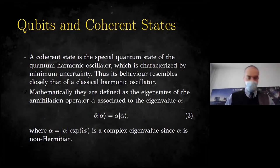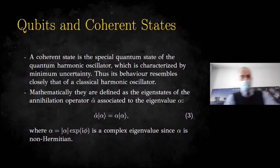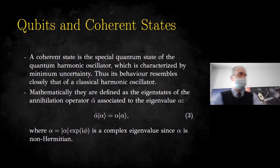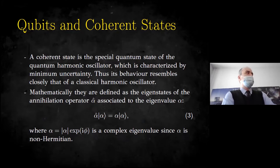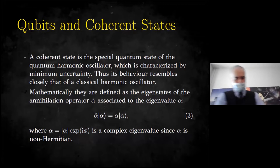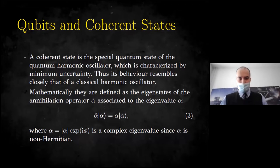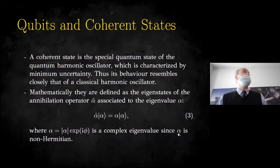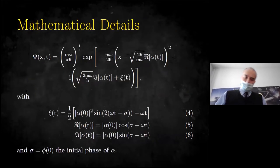How do we construct our qubits? We construct them through coherent states. Coherent states are the special states of the quantum harmonic oscillator characterized by minimum uncertainty, so the product Δx·Δp becomes minimum. Thus, their behavior resembles closely that of a classical harmonic oscillator. The coherent states won the Nobel Prize for Roger Glauber, because under some conditions they can describe the physics of lasers. Mathematically, they are defined as the eigenstates of the annihilation operator â associated to eigenvalue α — where α is a complex eigenvalue since â is not Hermitian.